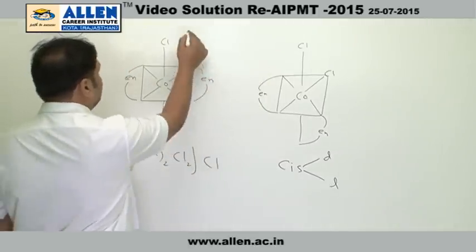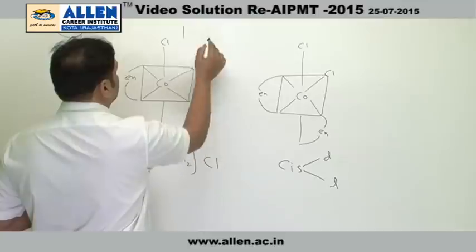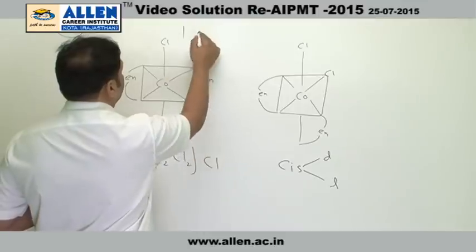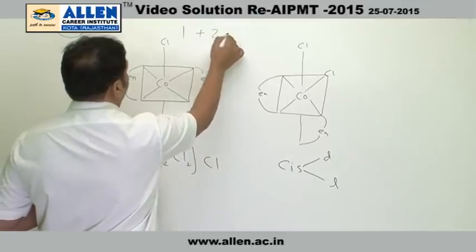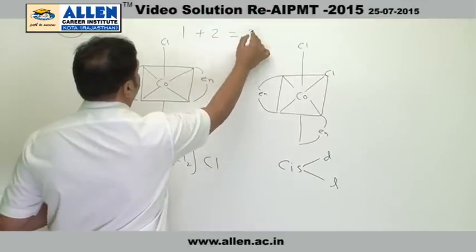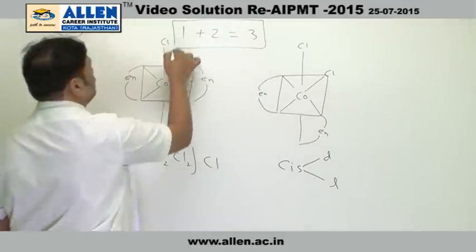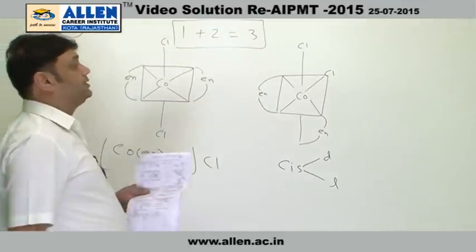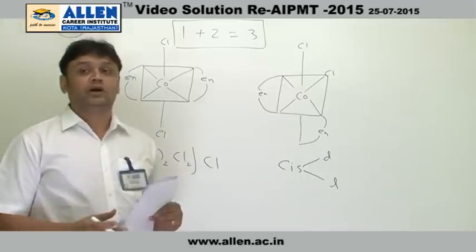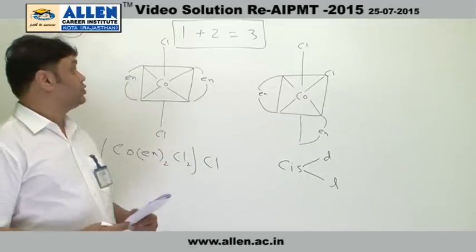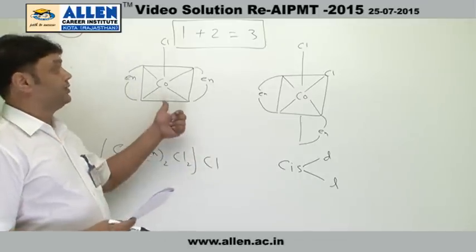So that is one isomer for the trans and two isomers for the cis, making three isomers in total. There will be three total isomers possible for this compound.